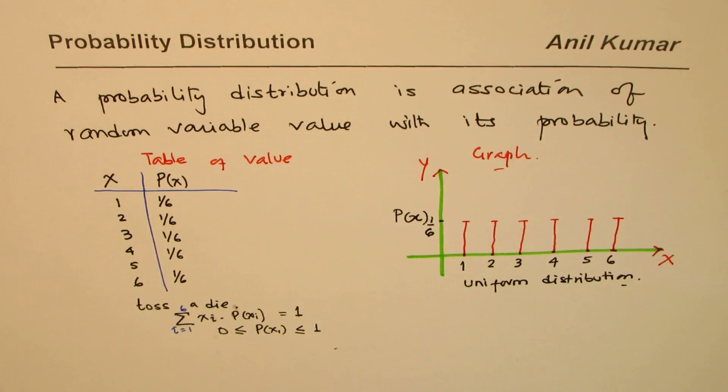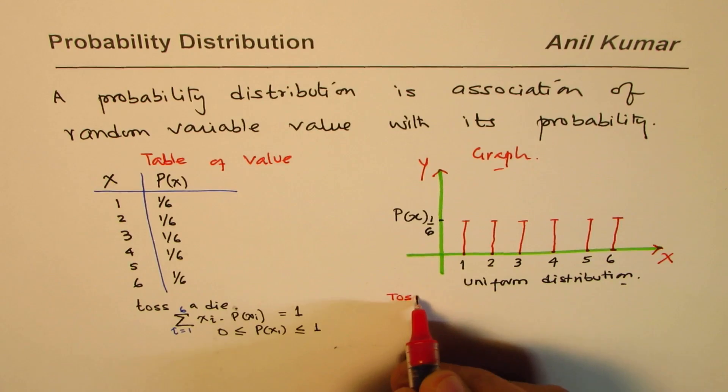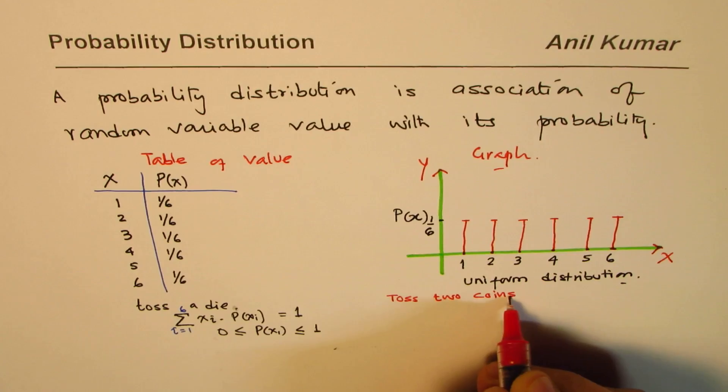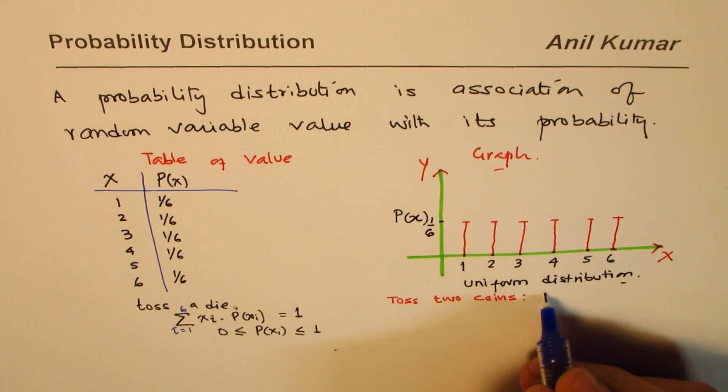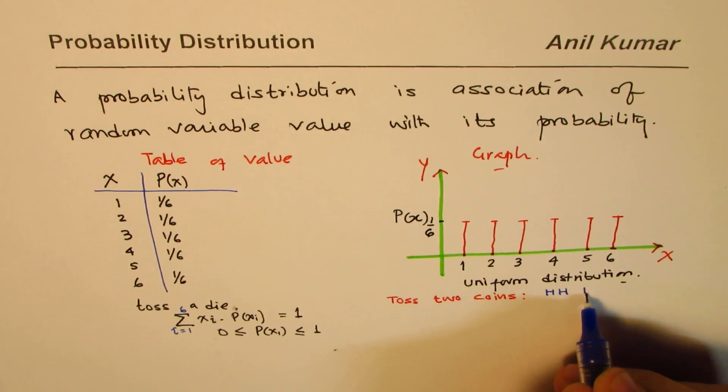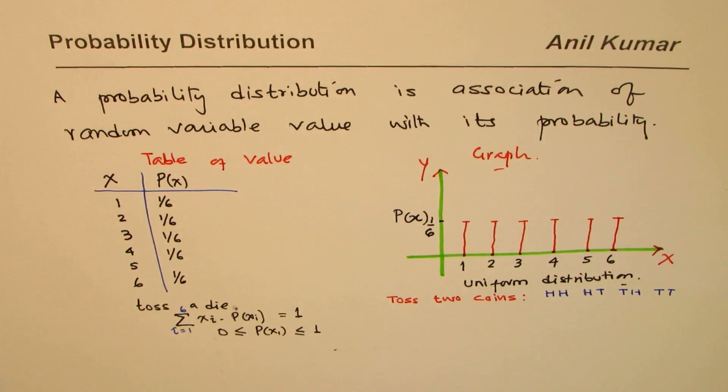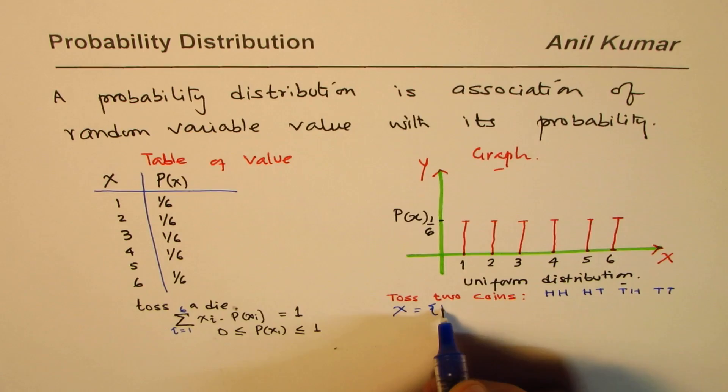You can make a table for tossing the coins. Let's say toss two coins. If you toss two coins, the possible outcomes are, we could get head head, head tail, tail head, or two tails.